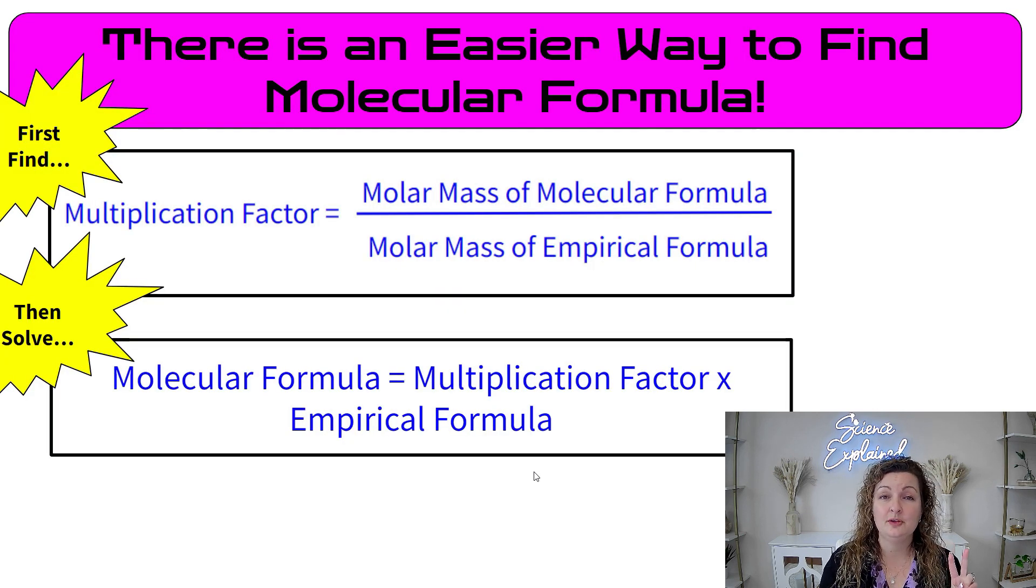So let's find an easier way of doing this. If we use these two formulas, which look scarier than they are. So we're going to first do our molar mass of the molecular formula, and we're going to divide that by the molar mass of our empirical formula. Once we solve for that, we're going to get our multiplication factor or like our multiplier. And you're just going to multiply that by the empirical formula. And then you're done.